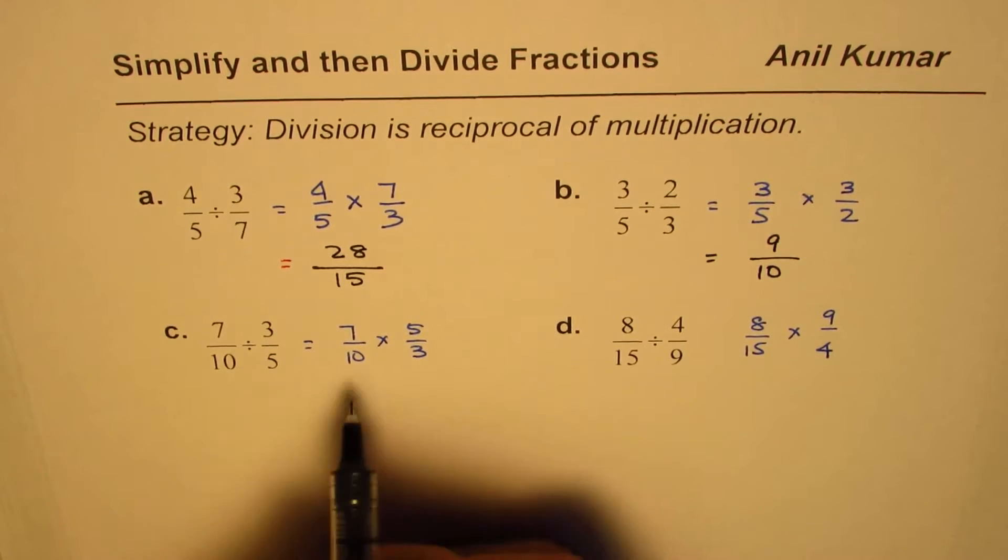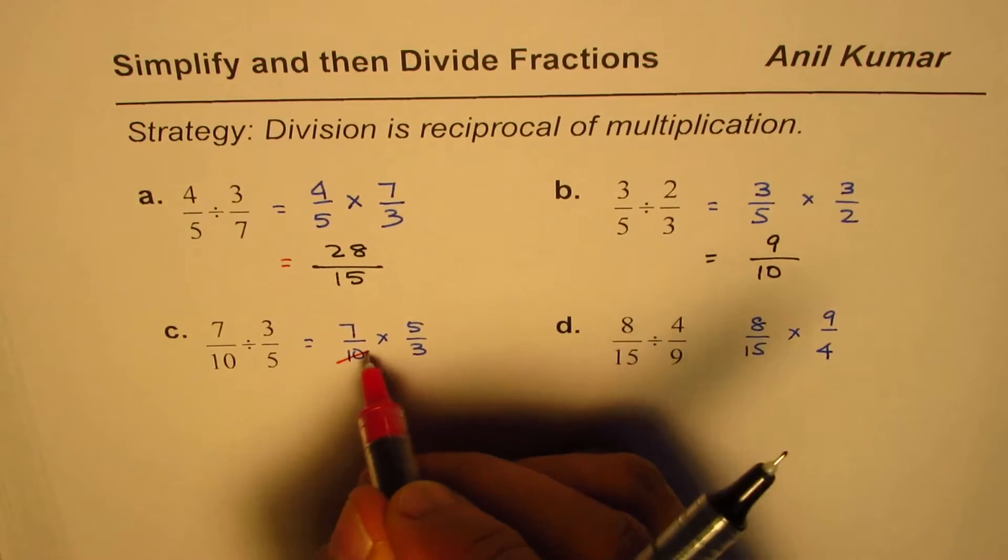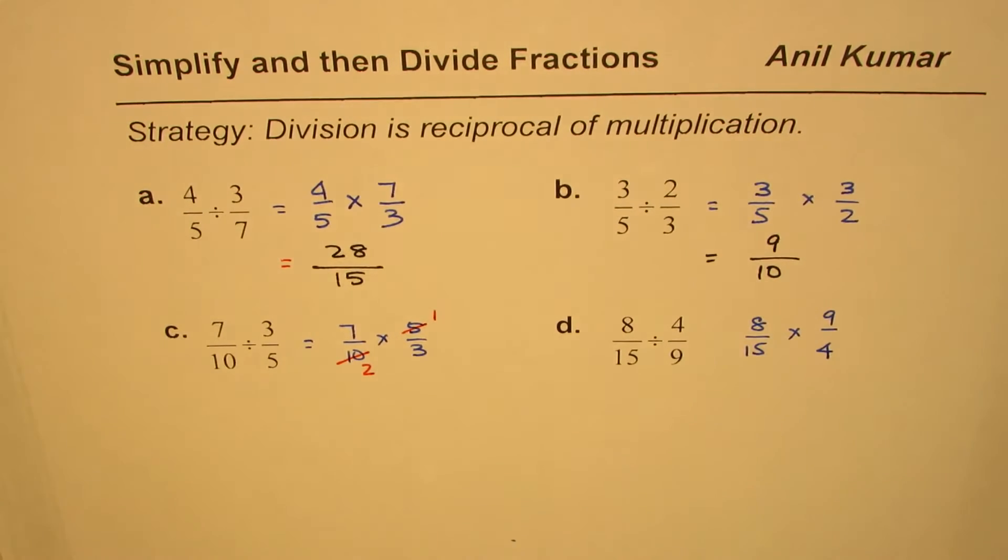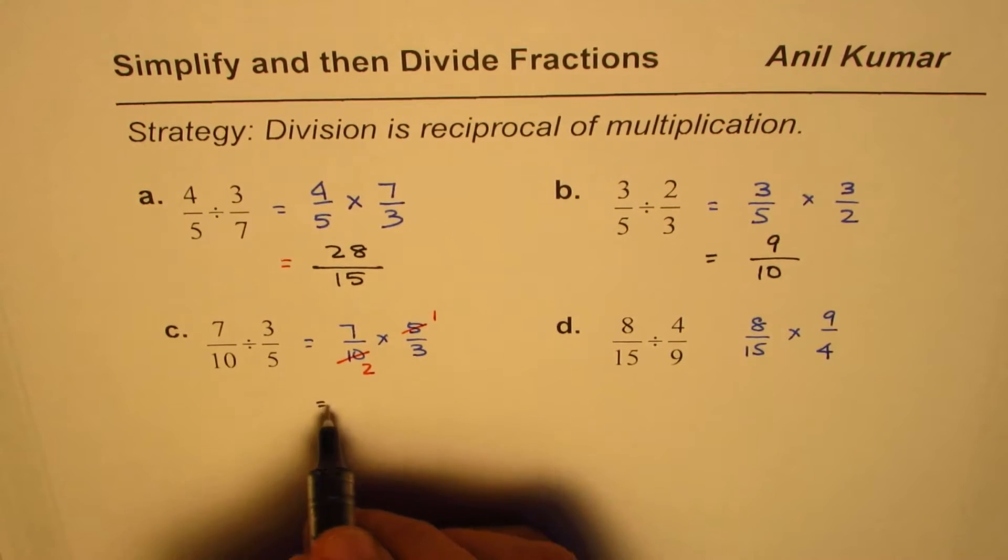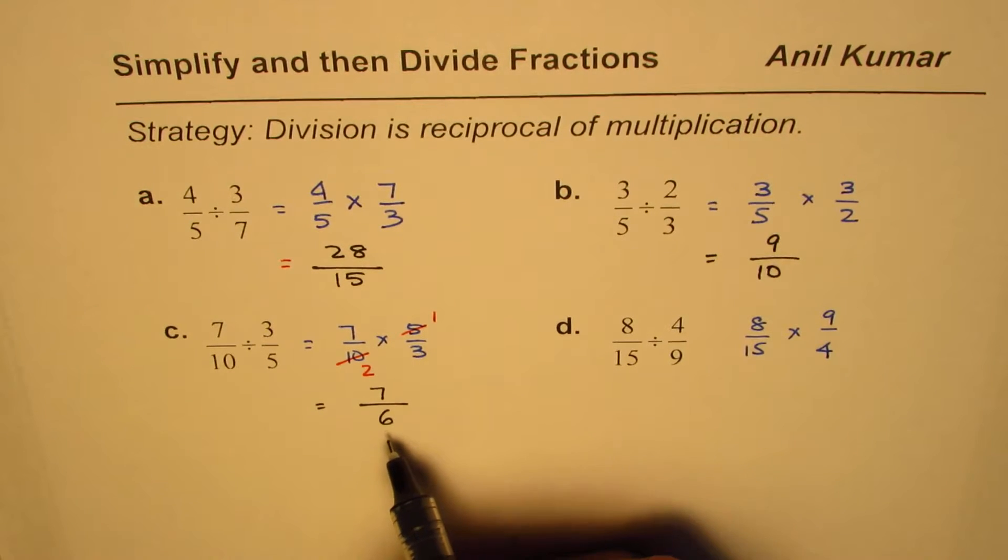For the third problem, we can simplify by dividing both by 5 to get 7/2 × 1/3. Multiplying: 7 × 1 is 7 in the numerator, 2 × 3 is 6 in the denominator, giving us 7/6. This improper fraction can be converted to the mixed number 1 1/6.